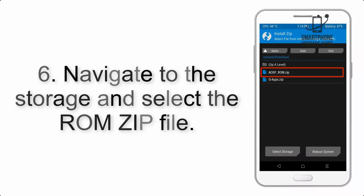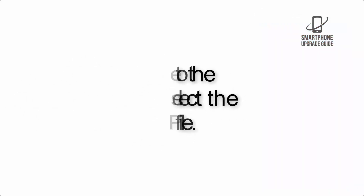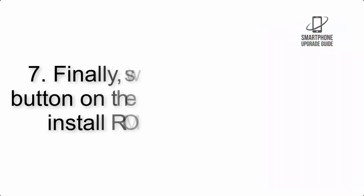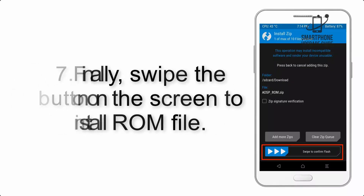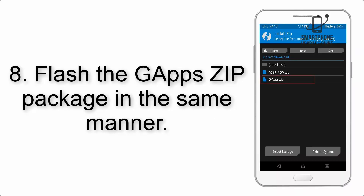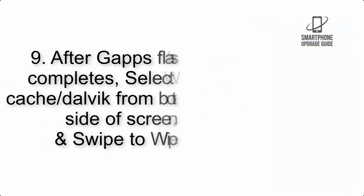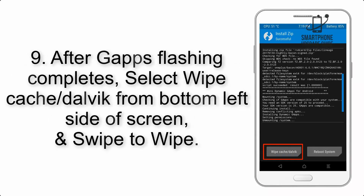Step 5: Go back to the recovery main screen and tap the Install button. Step 6: Navigate to the storage and select the ROM zip file. Step 7: Finally, swipe the button on the screen to install the ROM file.